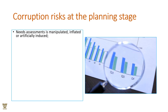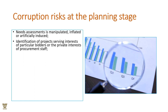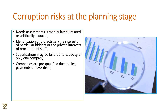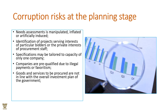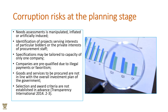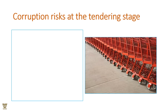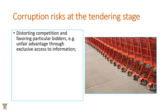Corruption risks at the planning stage include: needs assessment being manipulated, inflated, or artificially induced; identification of projects that serve the interests of particular staff members; specifications tailored to the capacity of one particular company; illegal payments and nepotism; and procurement of services or goods not aligned with sustainable development goals or with the cultural ethos of the country. Being transparent will keep the process clean and clear.